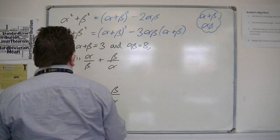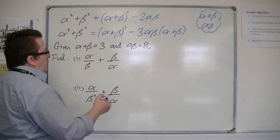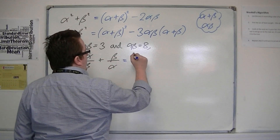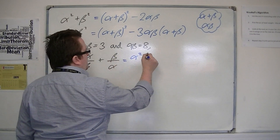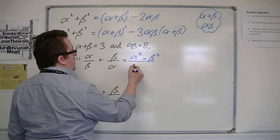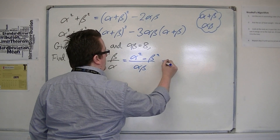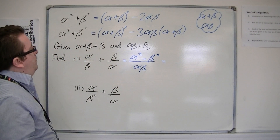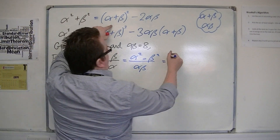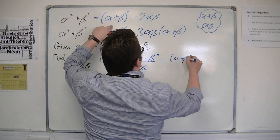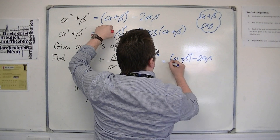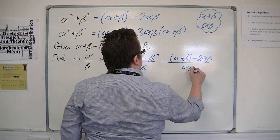Adding fractions together by cross multiplication, we're going to get alpha times alpha, so we get alpha squared plus beta squared over alpha times beta. Now alpha squared plus beta squared is alpha plus beta squared minus 2 alpha beta, and that's all over alpha beta.